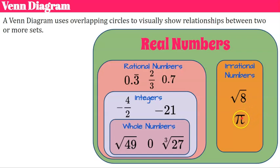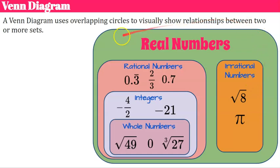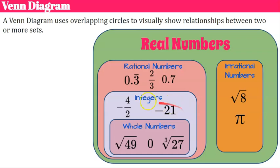Let's review the Venn diagram results. All irrational numbers shown are also real numbers — the irrational set sits within the real number set. From real numbers, we have rational numbers — all of those values are rational and real. The integers within are rational and real, and whole numbers are whole numbers, integers, rational, and real.